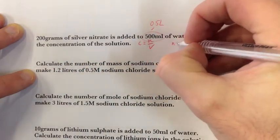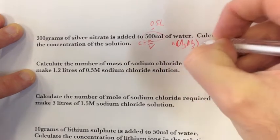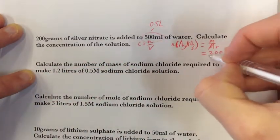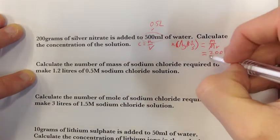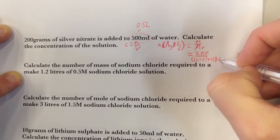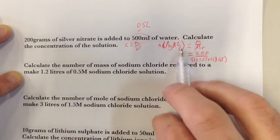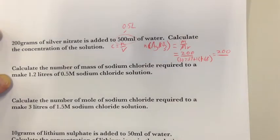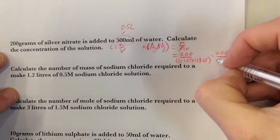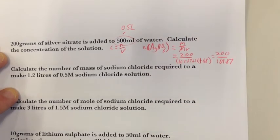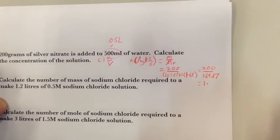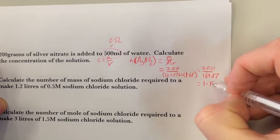So I need to first convert my grams into number of moles. I'm going to get my number of moles of silver nitrate, AgNO₃, equals my mass divided by my molar mass. This is going to equal 200 grams divided by the molar mass of silver nitrate, which is 107.87 for silver, plus 14 for nitrogen, plus 48 for 3 lots of oxygen. So that's 200 over 169.87, which equals 1.18 mol.